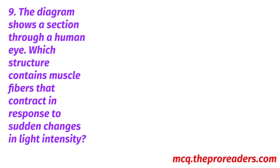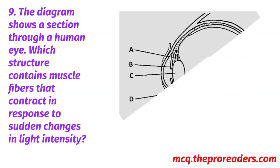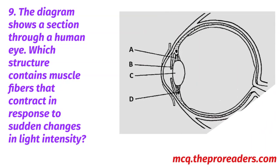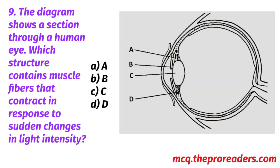The diagram shows a section through a human eye. Which structure contains muscle fibers that contract in response to sudden changes in light intensity? Options A, B, C, D. Option B is the correct answer.